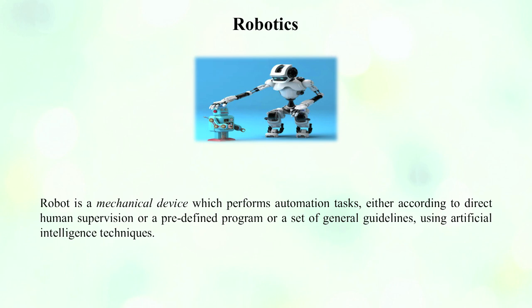A very significant component is the robot. The term 'robot' comes from the Czech word 'robota,' meaning forced labor. Computer experts are developing robots based on human intelligence — machines developed in the shape, size, and appearance of human beings. Robots are mechanical devices that perform automated tasks either under direct human supervision, according to a predefined program, or using a set of general guidelines using artificial intelligence techniques.